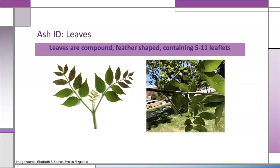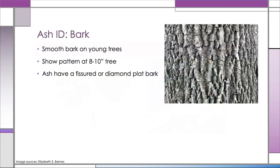Different ash species have different numbers of leaflets, which is variable and not always a good identification tool, but as a general rule they may have somewhere between four to seven or five to nine leaflets. One key way to distinguish ashes from other trees is by looking at the end of the leaf — some lookalike trees have a pair of leaflets at the end, whereas ashes have a single terminal leaflet. Ash bark is also very distinctive: ash trees tend to have smooth bark when young, but as the trees get bigger, they start to show a diamond pattern where the ridges split and then come together to form a diamond.